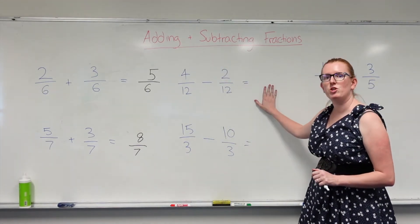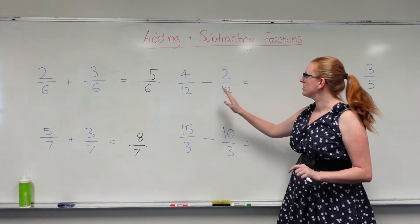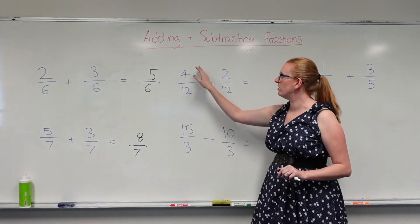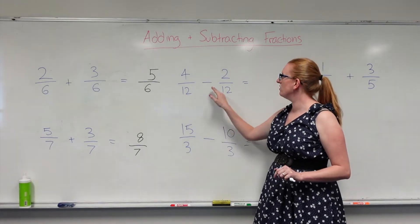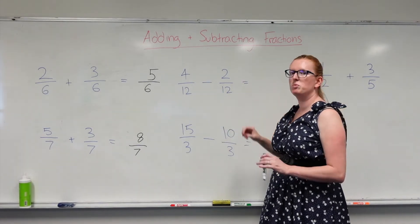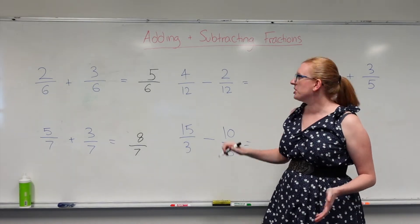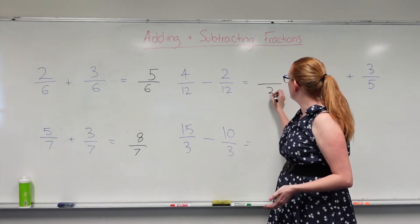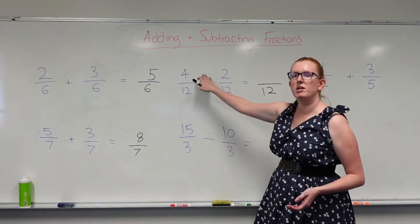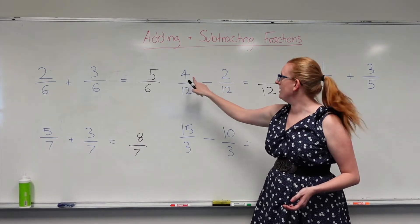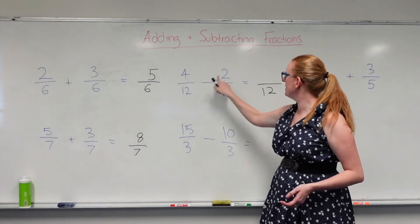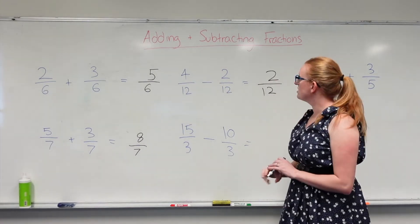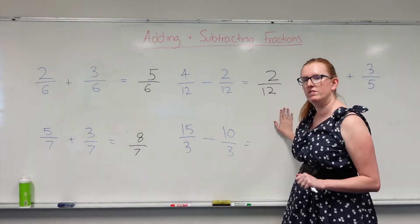Let's have a look at subtracting. So again I've got matching denominators, they're both over 12. I've got 4 over 12 minus 2 over 12. My denominators don't change. My answer is going to be over 12. All I'm going to do is take 2 away from 4. So 4 take away 2 gives me 2. So my answer is 2 over 12.